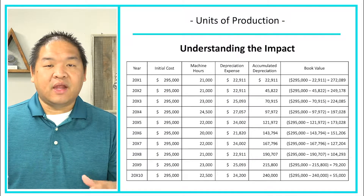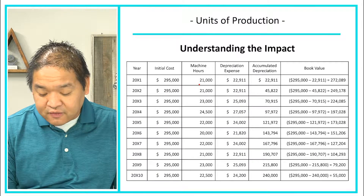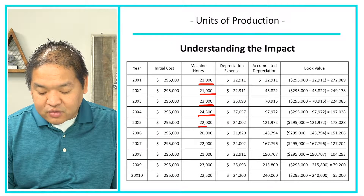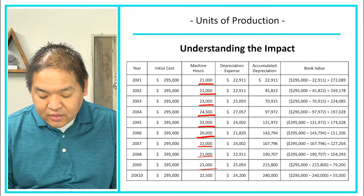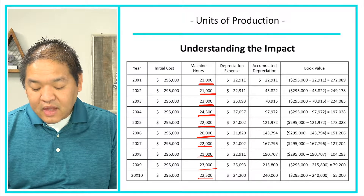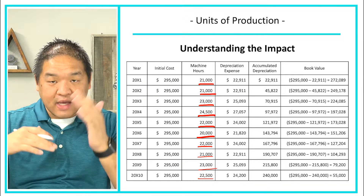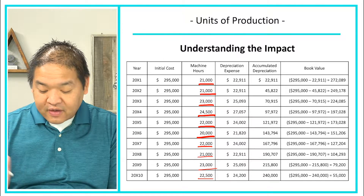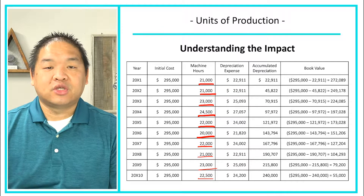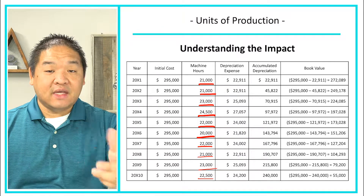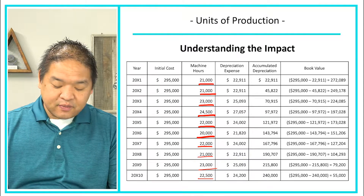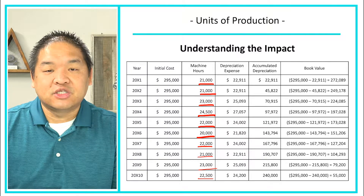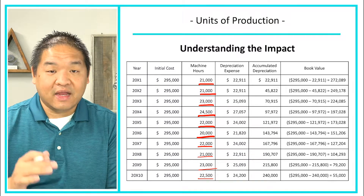Here's an example schedule — I've given you machine hours for each year: year one is 21,000; year two is 21,000; then 23,000; 24,500; 22,000; 20,000; 22,000; 21,000; 23,000; and 22,500. The depreciation expense fluctuates based on those machine hours. Accumulated depreciation builds up based on what we've taken since acquisition. I've kept this at 10 years to stay consistent with straight-line and declining balance comparisons, but it doesn't necessarily mean it actually is exactly 10 years.